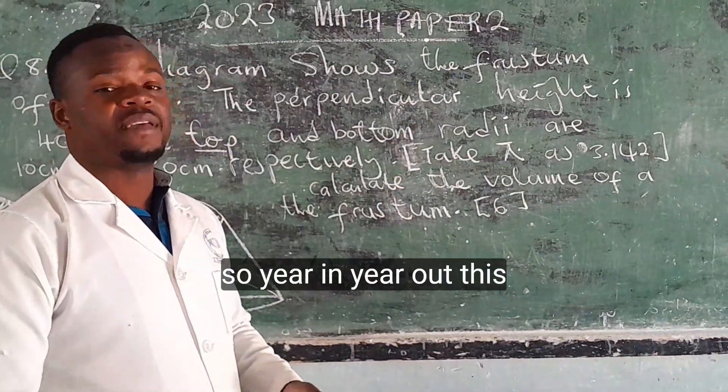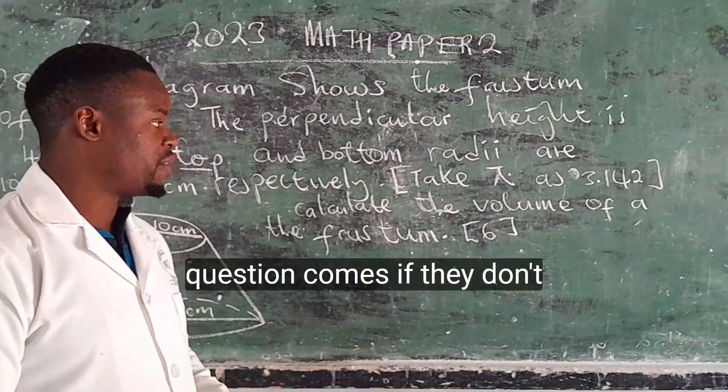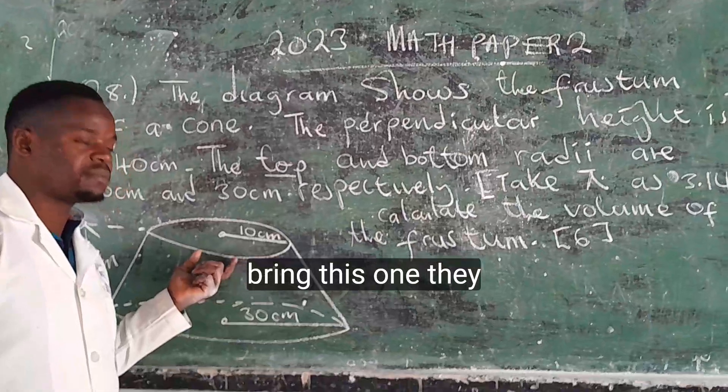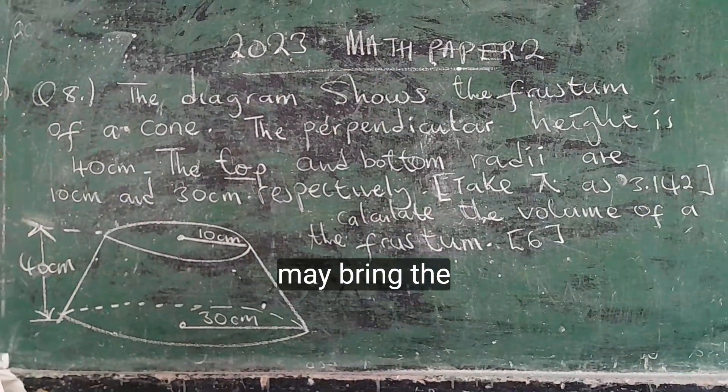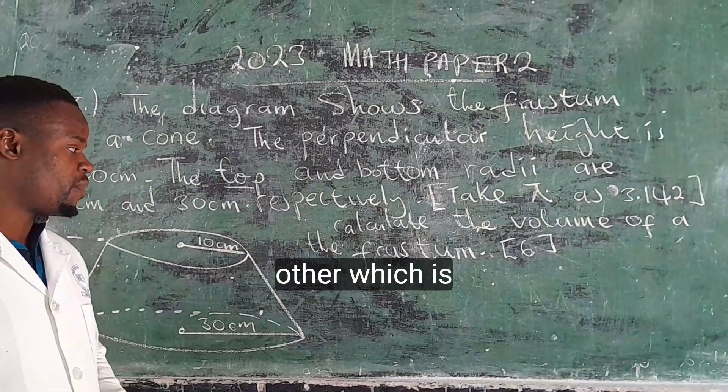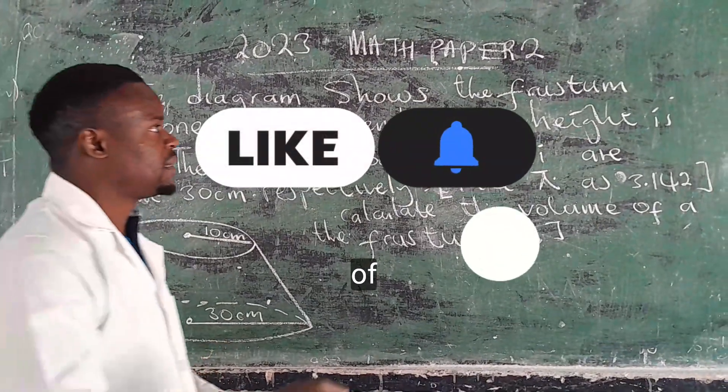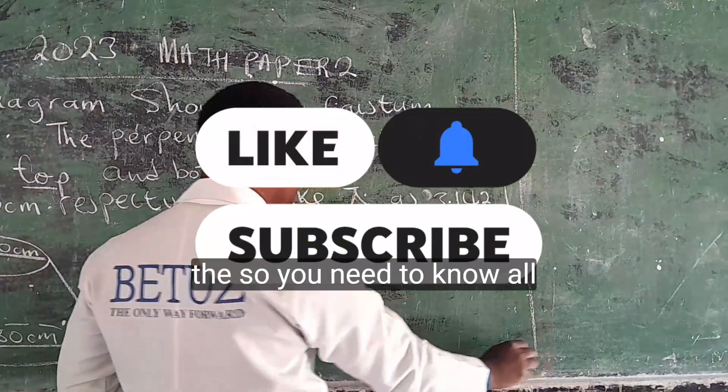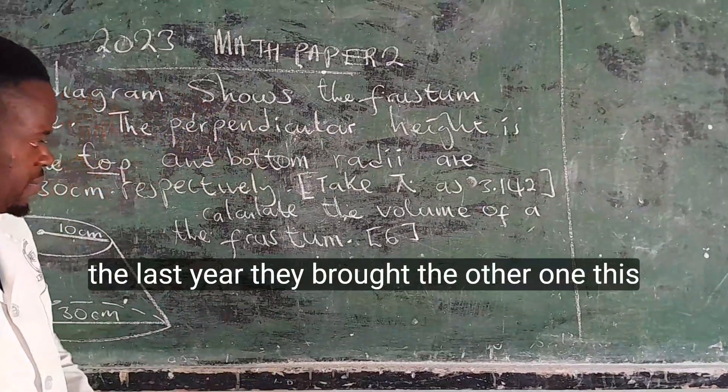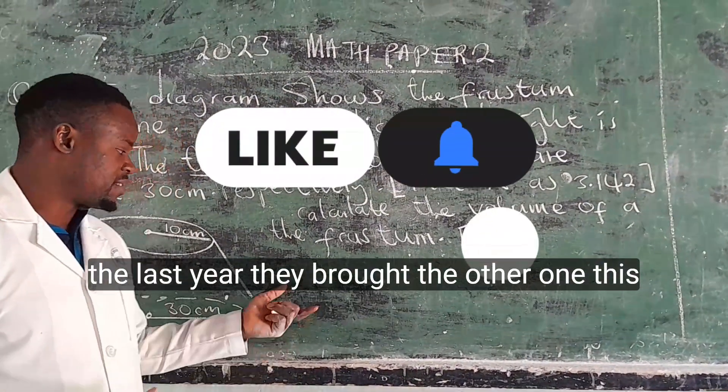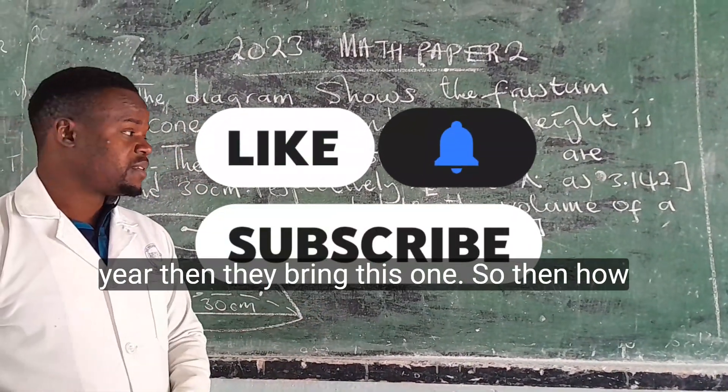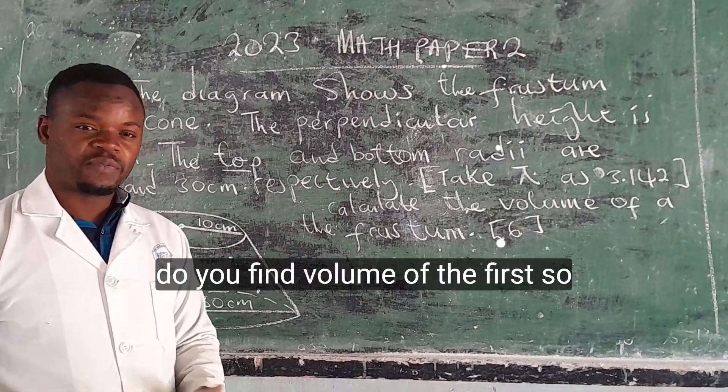So year in year out this question comes. If they don't bring this one, they may bring the other one, which is the volume of the frustum of a pyramid. So you need to know this. Last year they brought the other one, this year they may bring this one.